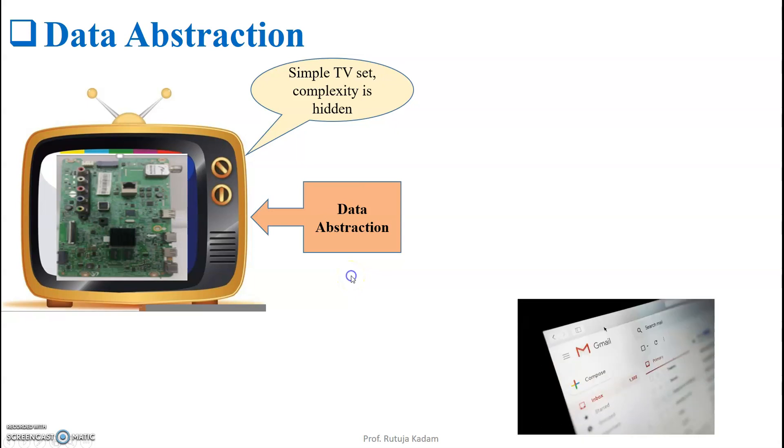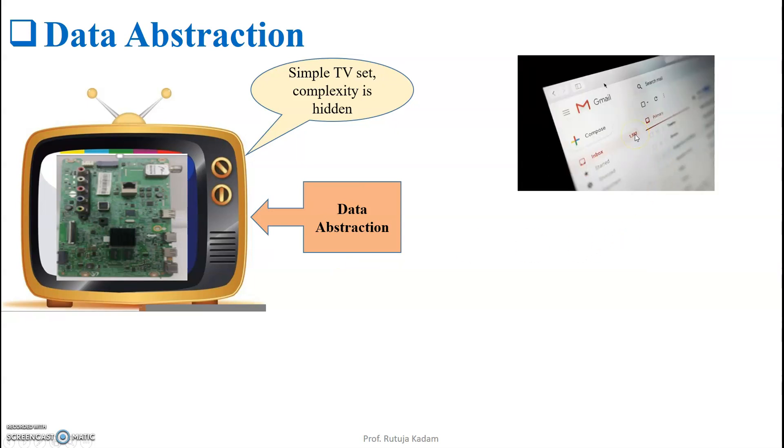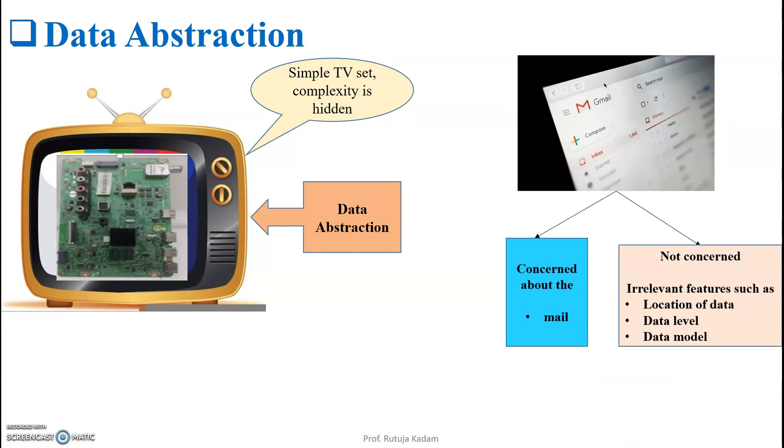Let us take one more real-time example. Consider your day-to-day mail checking process wherein you are using Gmail. You are concerned only about the mail, the contents of the mail, and who has sent it. But you are not bothered about irrelevant features such as the location of the data, the data level, data model, where it is actually stored, its physical address, logical address, or data structure. What we are bothered about is the sender and the contents. So here the complex things are hidden from the user.